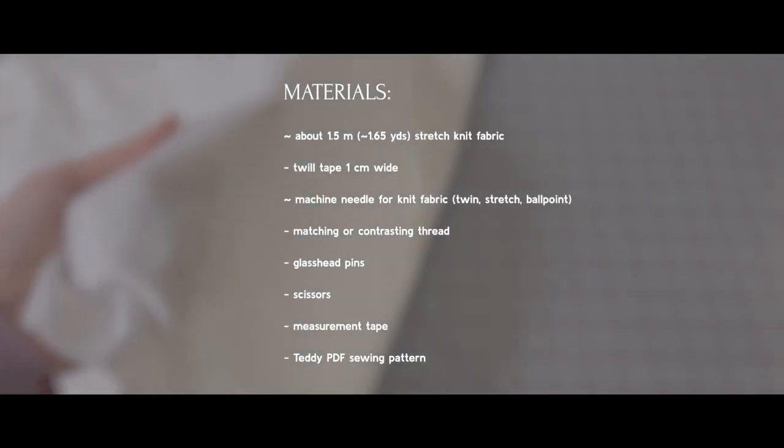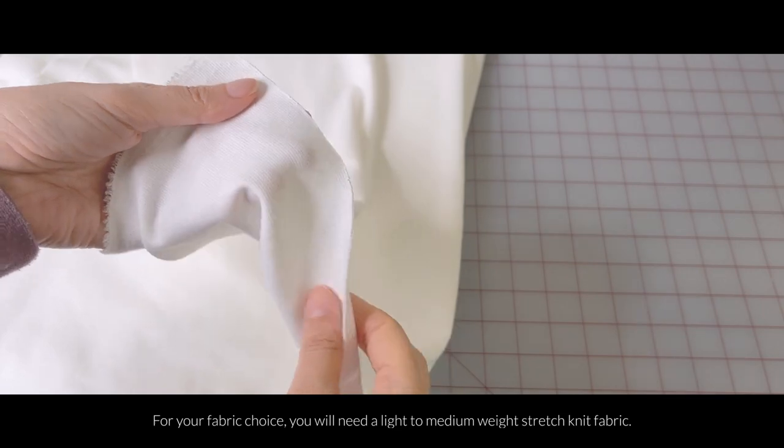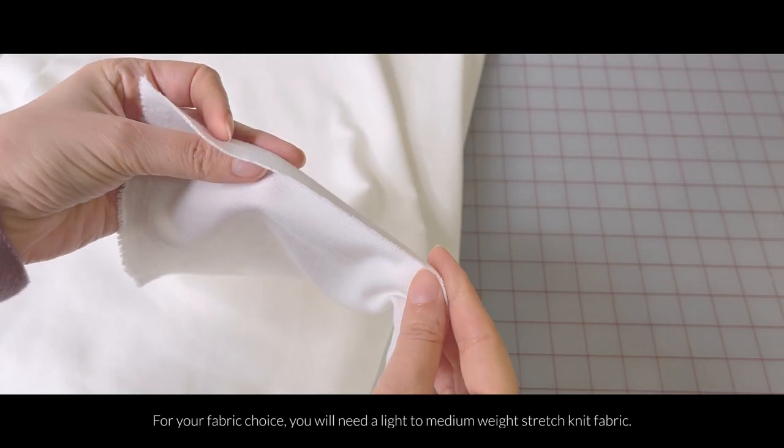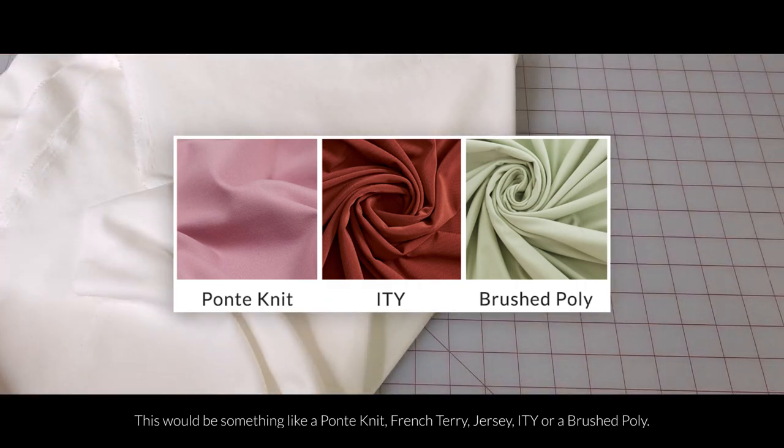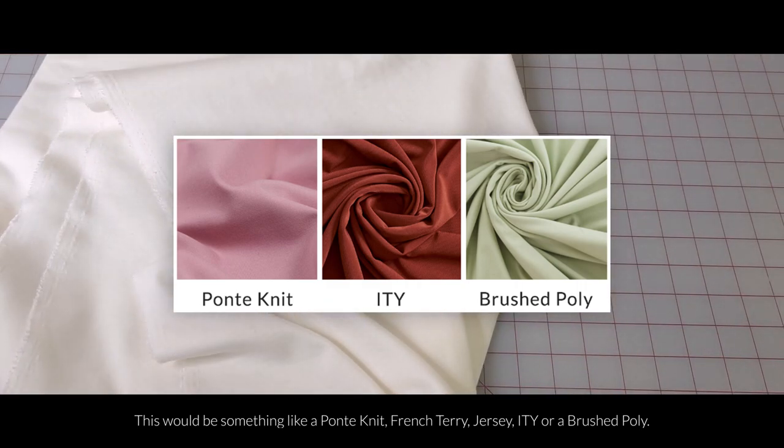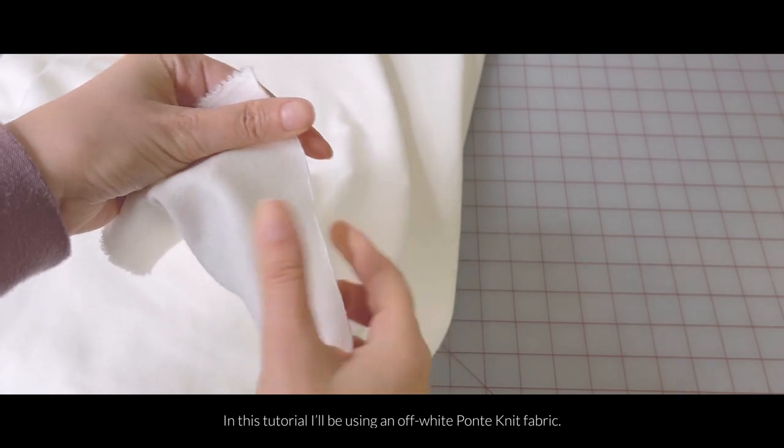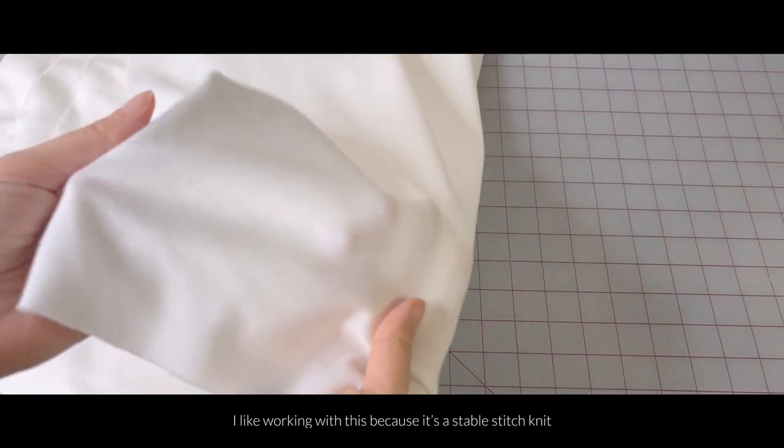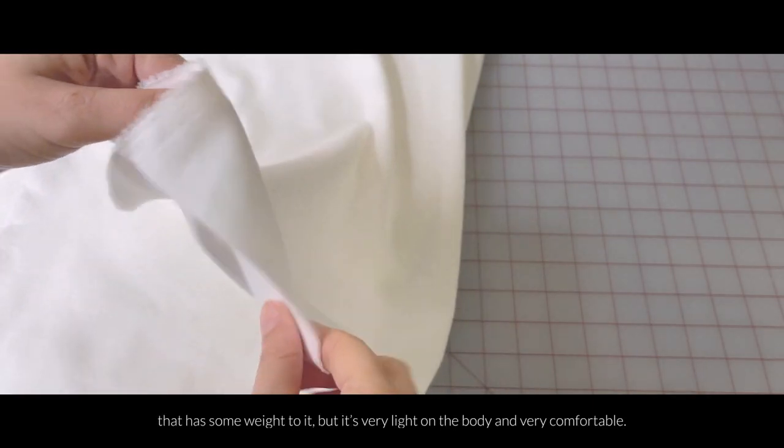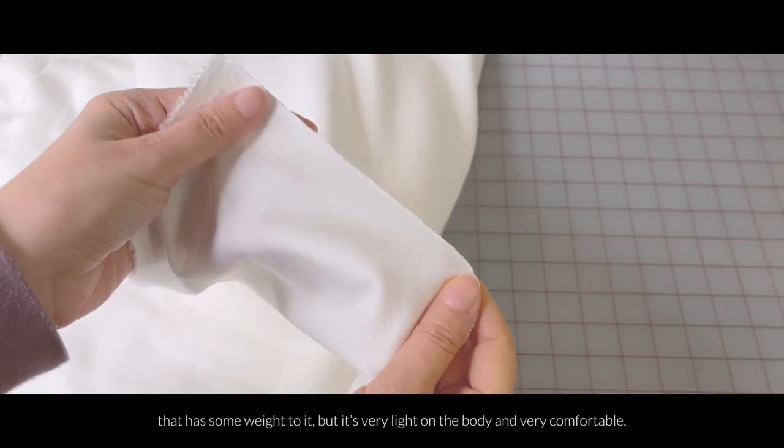Here are the materials that we'll need. For your fabric choice, you'll need a light to medium weight stretch knit fabric. This would be something like a ponta knit, French terry, jersey, ITY, or a brushed poly. In this tutorial, I'll be using an off-white ponta knit fabric. I like working with this because it's a stable stretch knit that has some weight to it, but it's very light on the body and very comfortable.